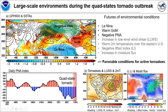This is the 500 hectopascal geopotential height as black contours and SST as shading during the cold-state tornado outbreak. We can find three main features of environmental conditions during this event: La Niña, the warm Gulf of Mexico, and the negative PNA pattern. And this negative PNA persists over 10 days.